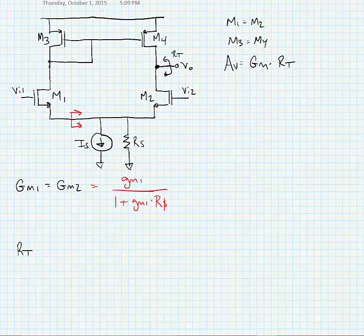To figure out what's connected to the source, we're going to look from the source of M1 towards M2, and we'll see that RS is equal to 1 over GM2.